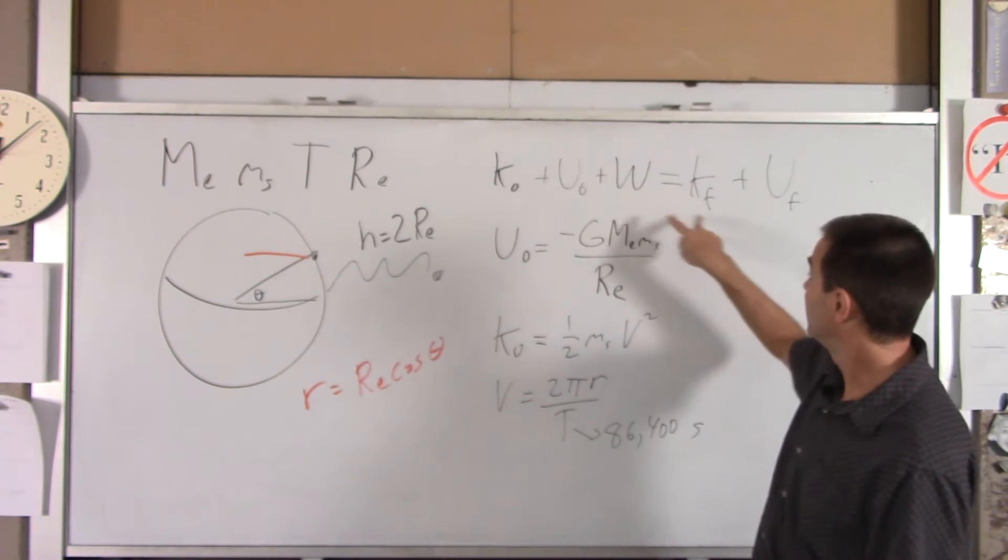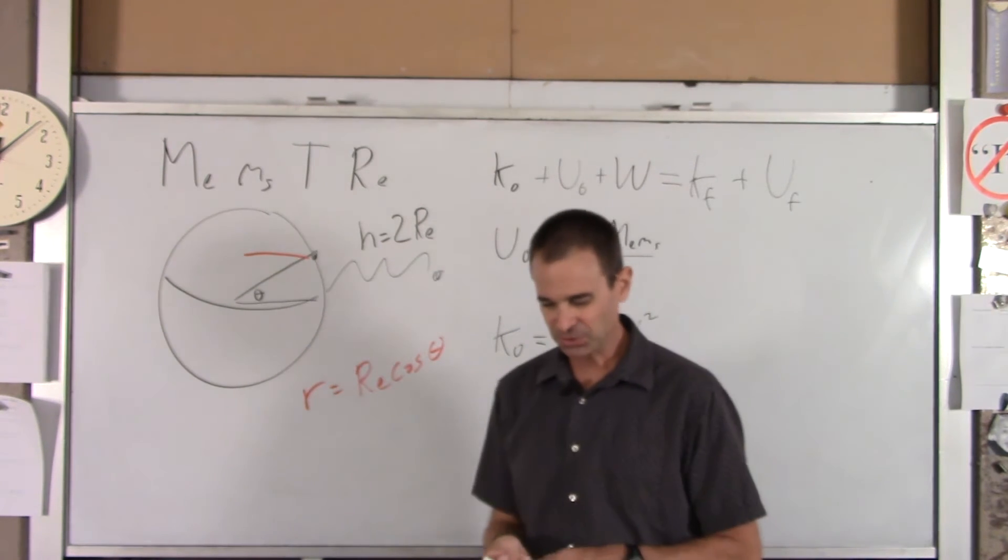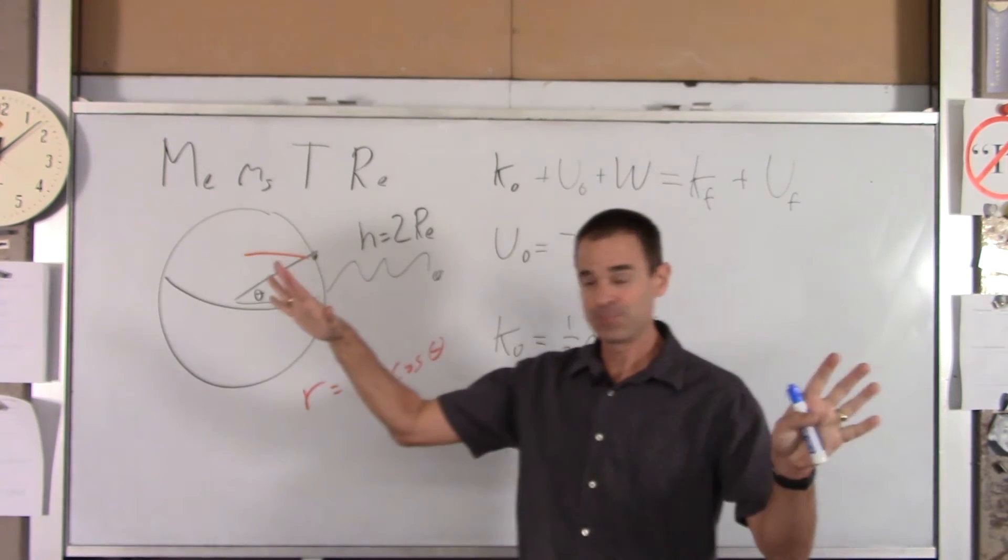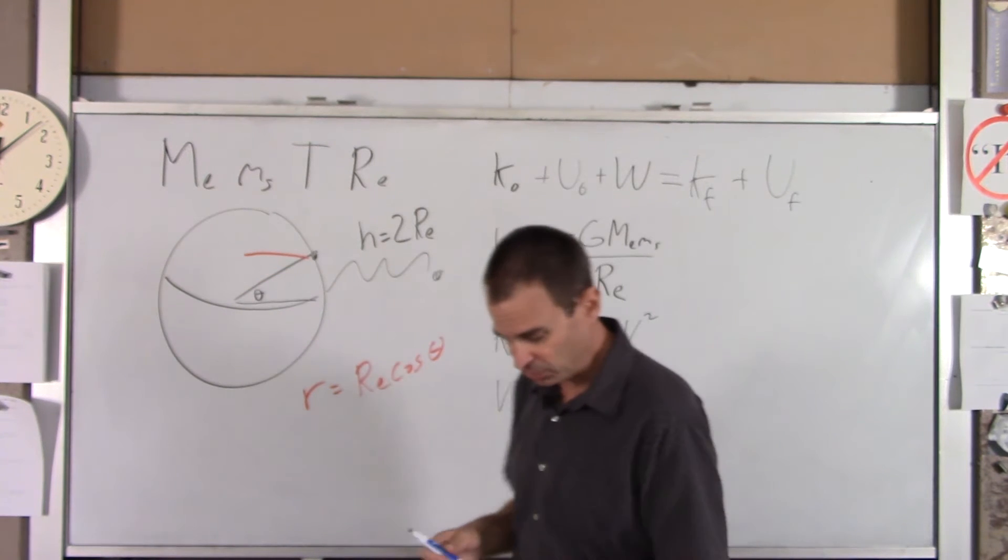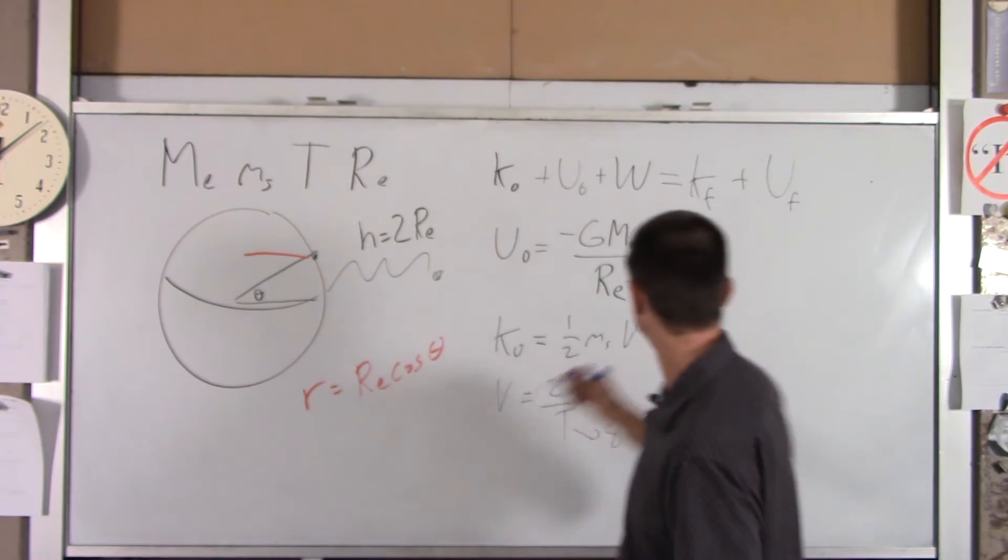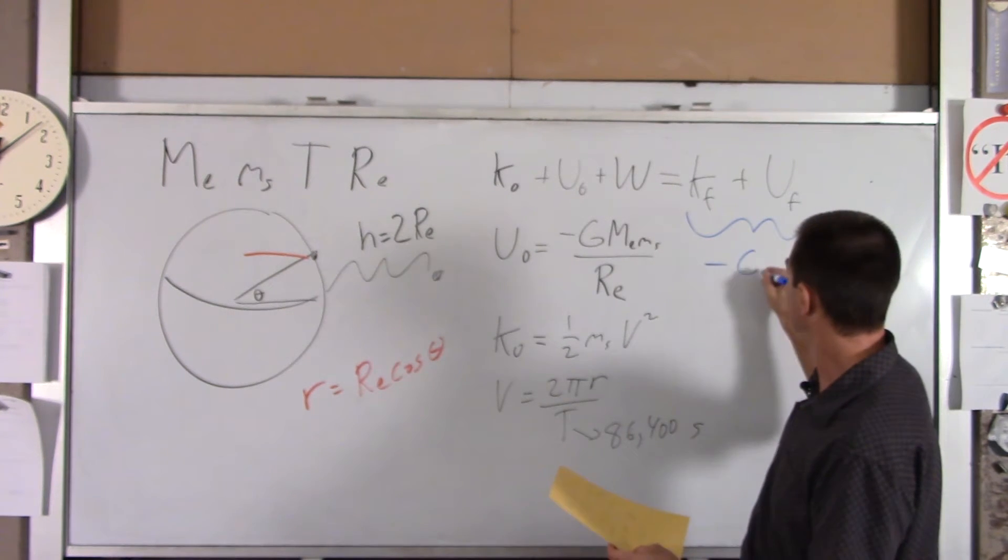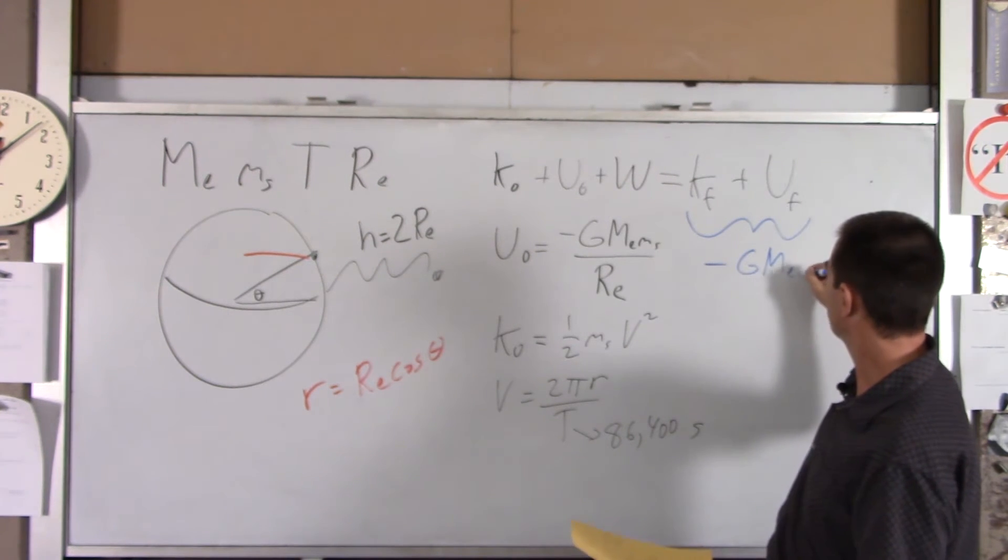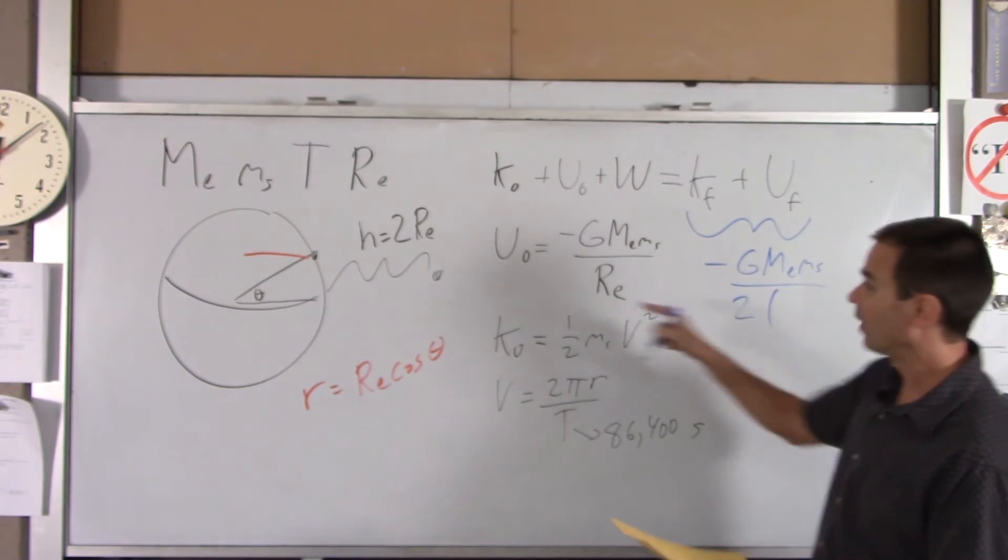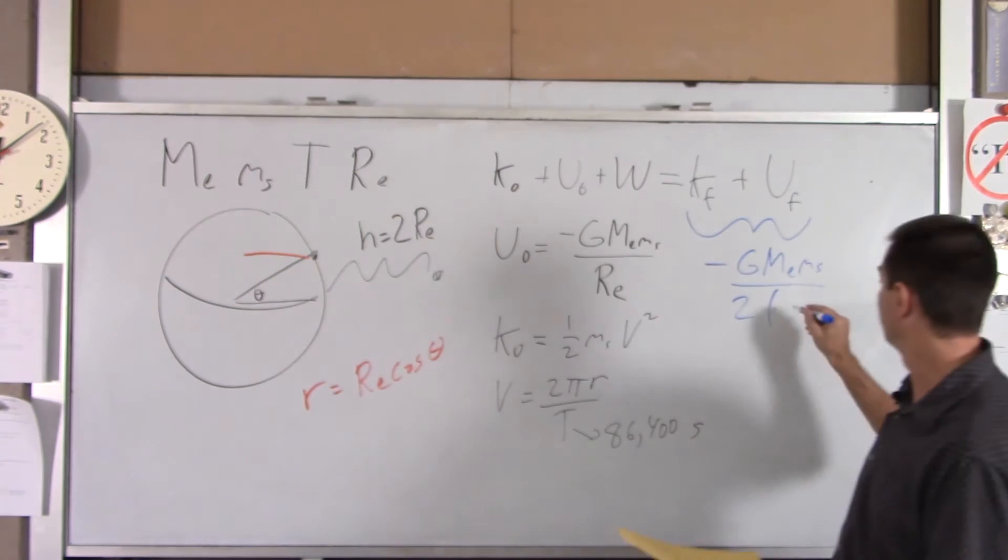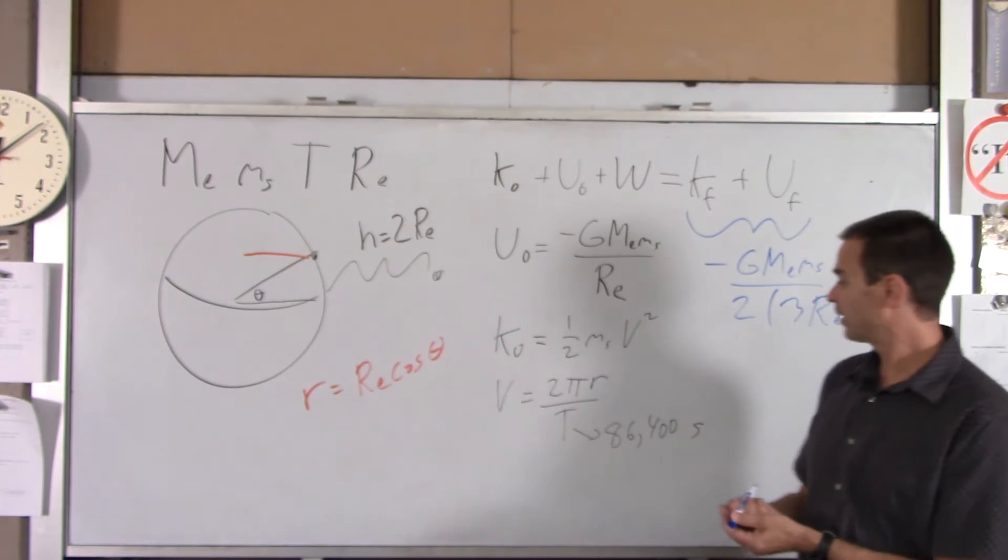We got this. We got this. We're trying to find that. k final plus u final, oh, we're taking a big shortcut on this one. In class, we talked about the following. If we are in a circular orbit, which is what I want there, this shortcuts to the following. These two added together are negative G, mass of the Earth, mass of the ship, over 2r. Now, r being how far are we from the center of the Earth? Three Earth radii.